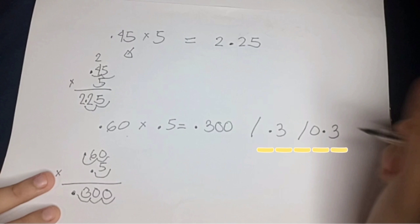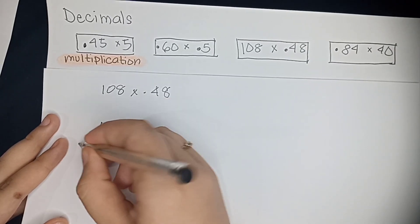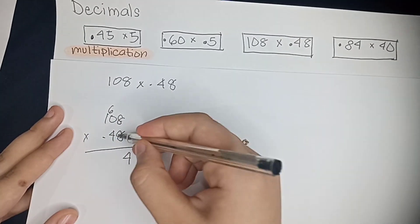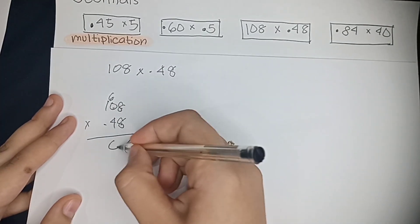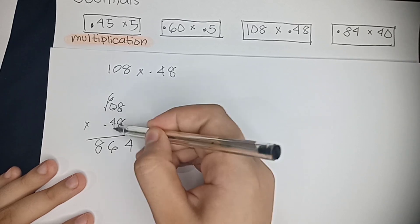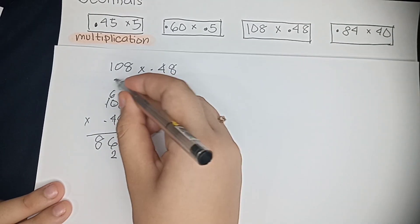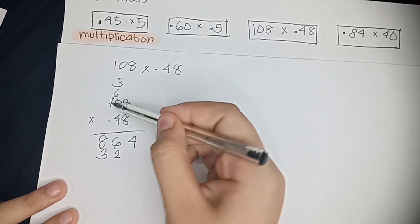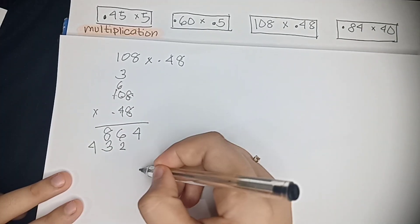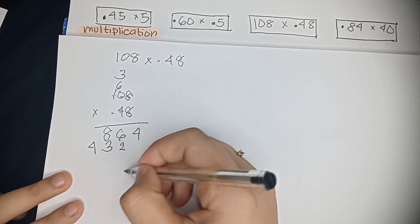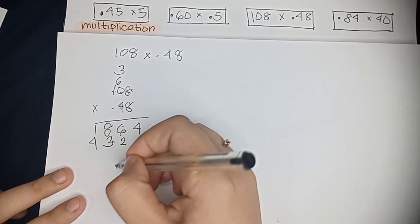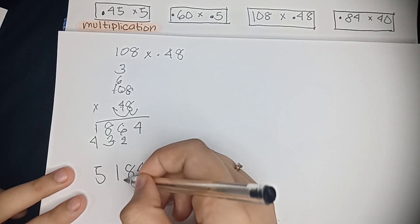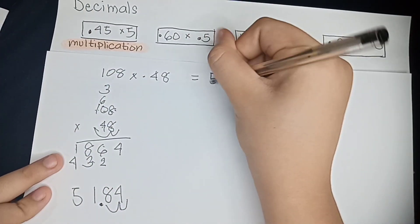So now let's move on to 108 multiplied by 0.48. 8 multiplied by 8 equals 64, carry 6. 8 multiplied by 0 equals 0, plus 6 equals 6. 8 multiplied by 1 equals 8. 4 multiplied by 8 equals 32. 4 multiplied by 0 equals 0, plus 3 equals 3. 4 multiplied by 1 equals 4. So we're going to be adding this, so bring down 4. 6 plus 2 equals 8. 8 plus 3 equals 11, carry 1. 1 plus 4 equals 5. We're going to count the decimal from the decimal point. That's two movements. So our answer equals 51.84.